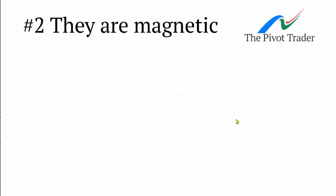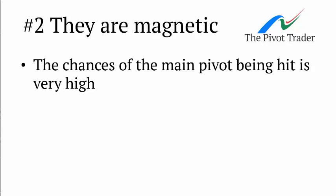Fact number two: they are magnetic. The chances of the main pivot level being hit — the level which is the high, low, and close of the previous period divided by three — the chances of that being hit ranges somewhere between 75 and 80 percent on most currencies. So you're looking at a real high probability of the pivot being hit, and it's worth taking that into account.